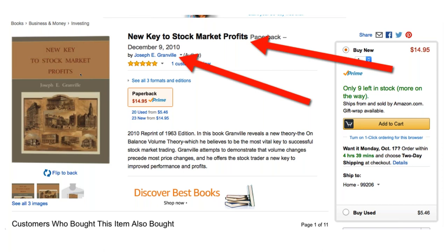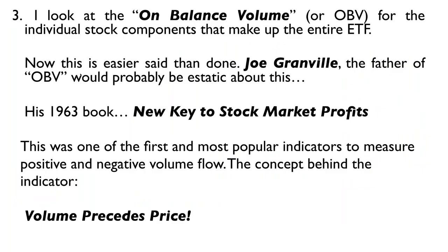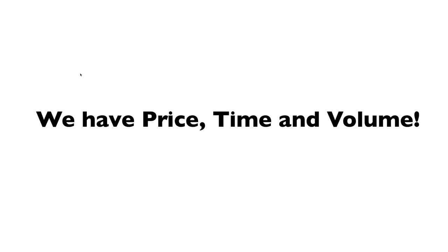Here's the real key. In 1963, Joe Granville came out with a book called 'New Key to Stock Market Profits,' which introduced a brand-new concept he invented called On Balance Volume (OBV). OBV is a very simple concept: volume precedes price. A change in volume is going to precede a change in price — both bullish and bearish. Everything that we do in the ETF Tipping Point is built on this. However, we do not use simple 1963 On Balance Volume.